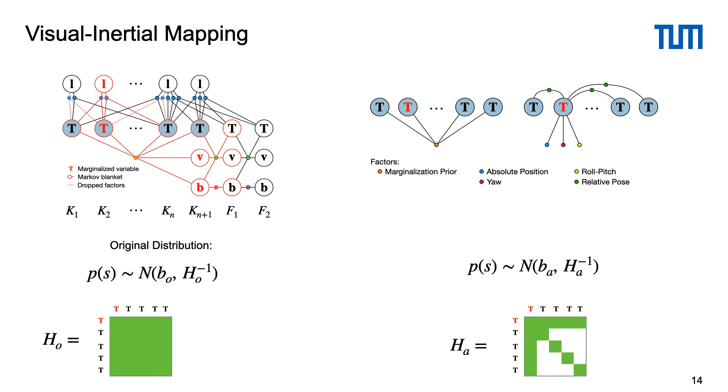This probability distribution is relevant for the global mapping but we cannot simply insert it into the global optimization because the poses are linearized around their absolute values. Instead we can try to find a set of sub-structured non-linear factors that approximate this distribution well around the current estimates.